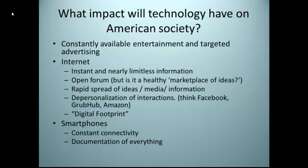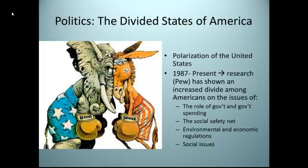I also want to look at the idea of our politics and the idea of the divided states of America. The United States is a very polarized place, and a lot of Americans don't agree on a lot of things. Our two major political parties, the Republicans and Democrats, can't seem to find common ground on anything. From 1987 to the present, the Pew Research Group has been polling Americans to figure out how they are divided on issues. They have shown that since 1987, there's been a significant increase in the divide on issues such as the role of government and the amount of government spending, the social safety net such as welfare programs and social security, environmental and economic regulations, as well as various social issues such as abortion and gay marriage.